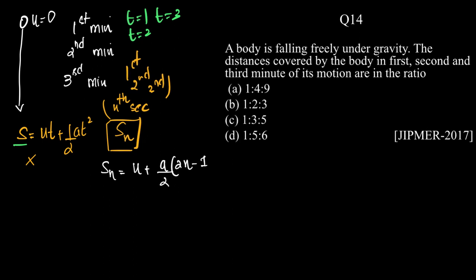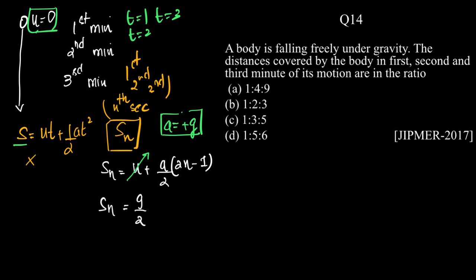The formula is Sₙ = u + (a/2)(2n − 1). Since the body is falling from rest, u = 0. Since it is under acceleration due to gravity, a = g. So Sₙ = (g/2)(2n − 1). Taking g = 10, Sₙ = 5(2n − 1). This is our general formula.